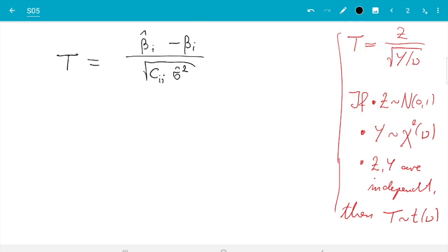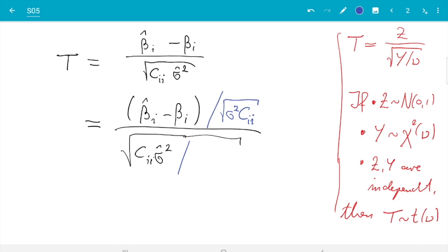Good. Let's see whether we can write T in this form. And it turns out we can. Namely beta hat i minus beta i we know is normal distributed. Only the variance is wrong. We wanted standard normal distributed. So what we need to do is divide it by the standard deviation, and that is square root of sigma squared Cii. And then to make it right we need to do the same thing in the denominator. So here we have Cii sigma hat squared, and now to keep the two terms equal we need to also divide by the square root of sigma squared Cii.